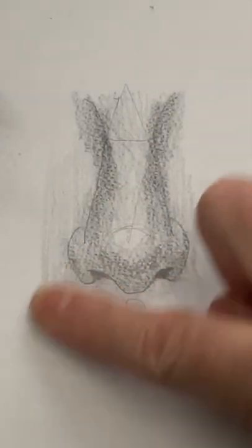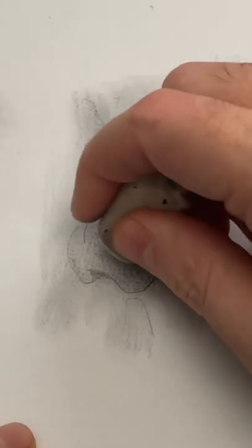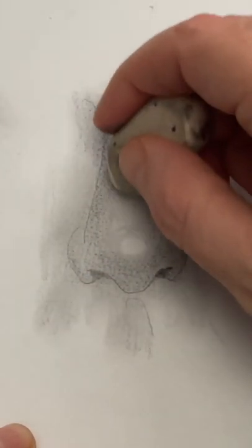Okay, now smudge the whole thing with a finger or a blending stump. Then with an eraser make an exclamation point.